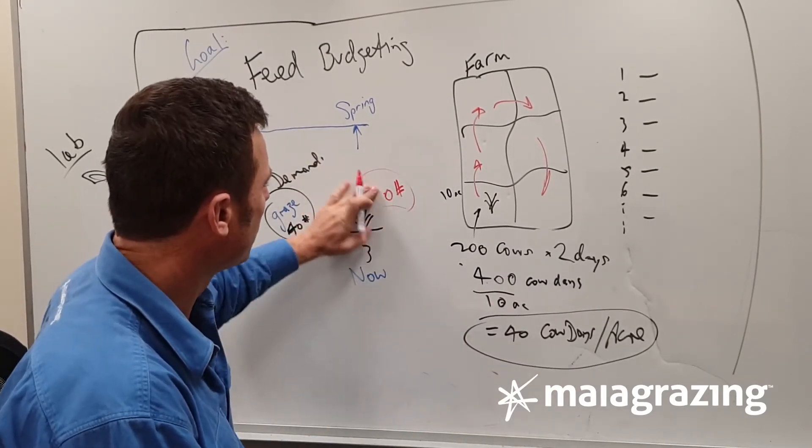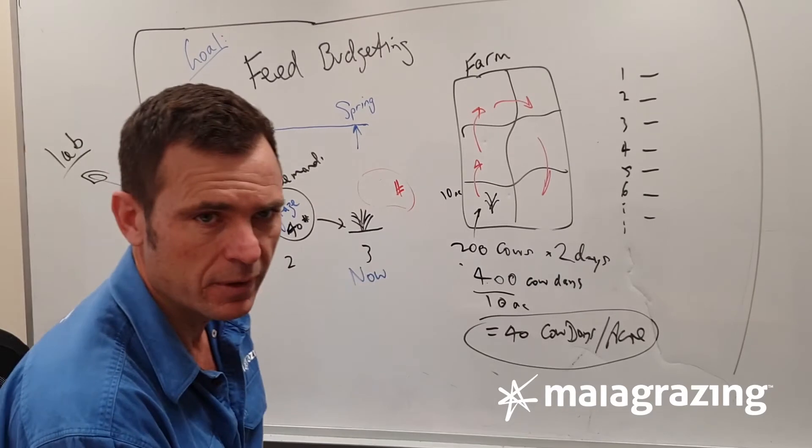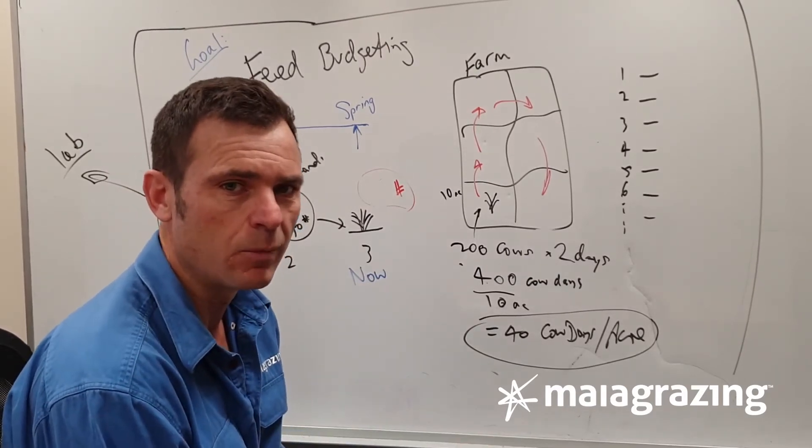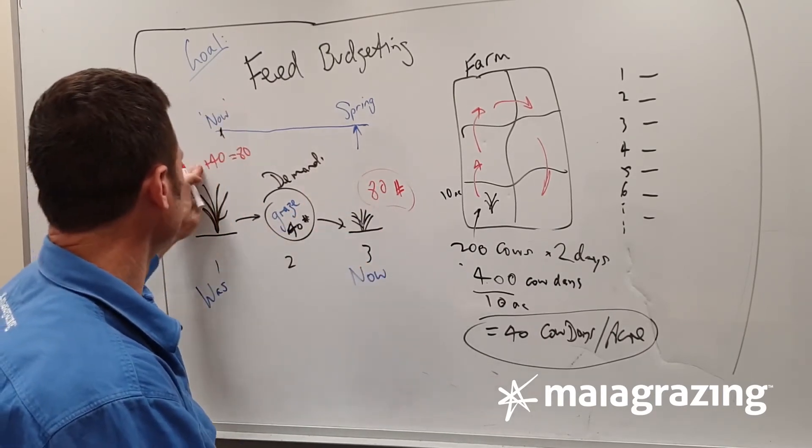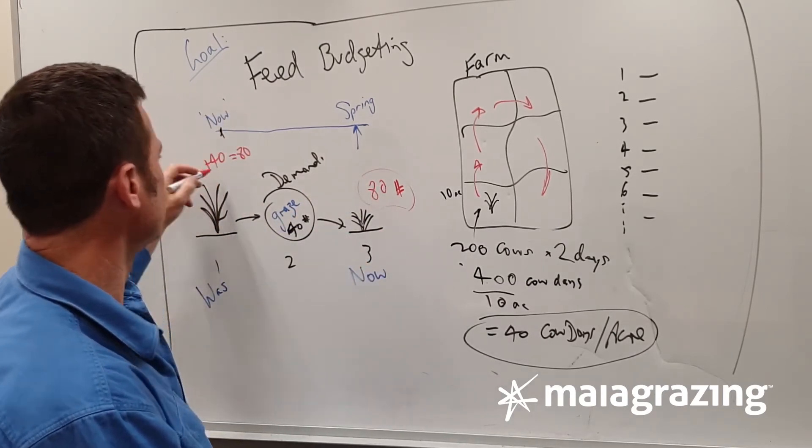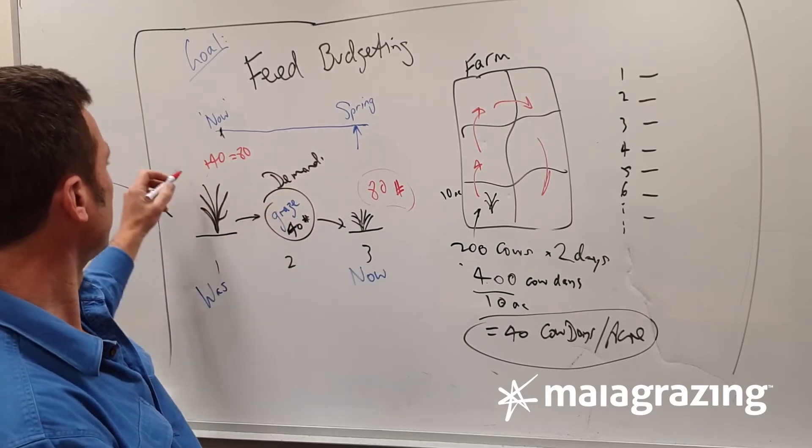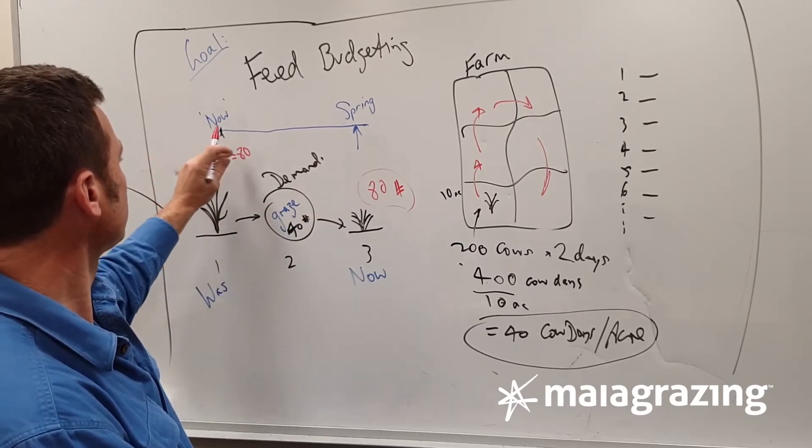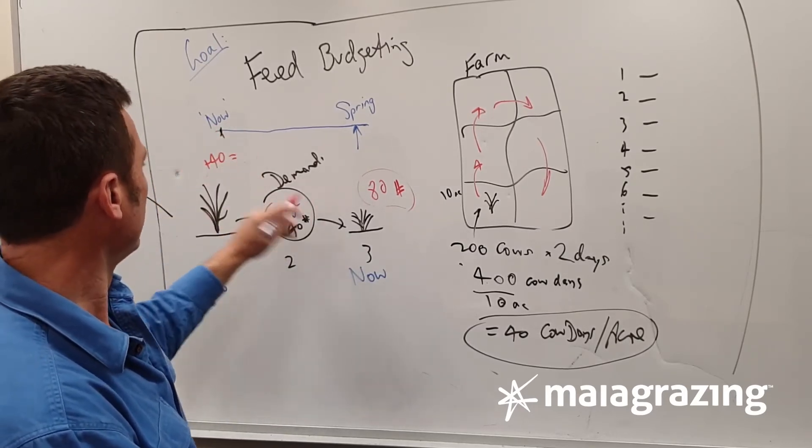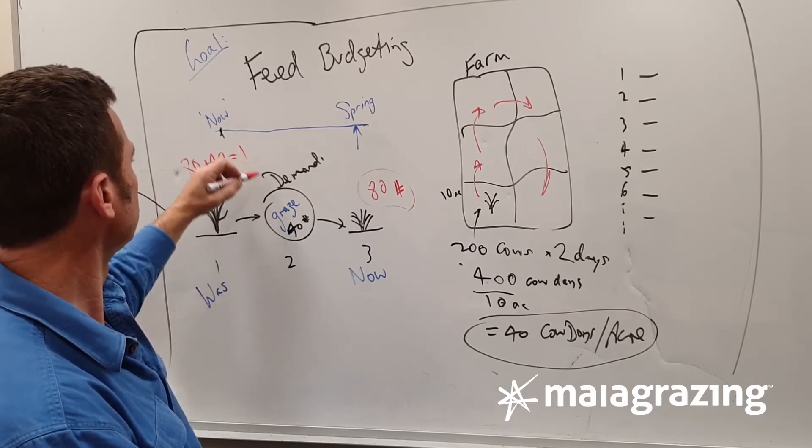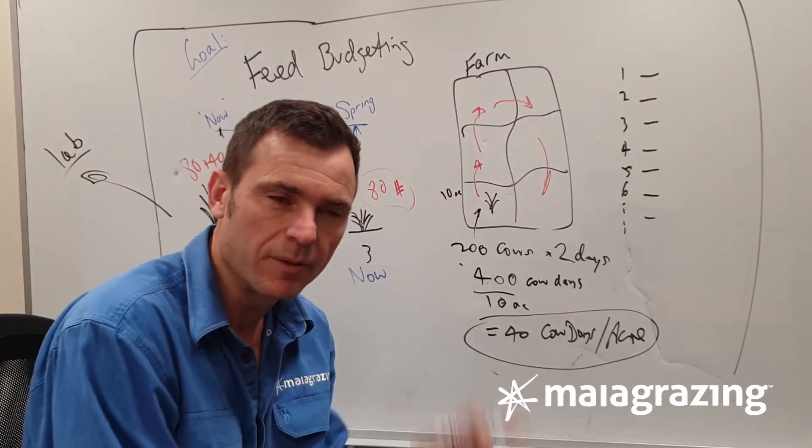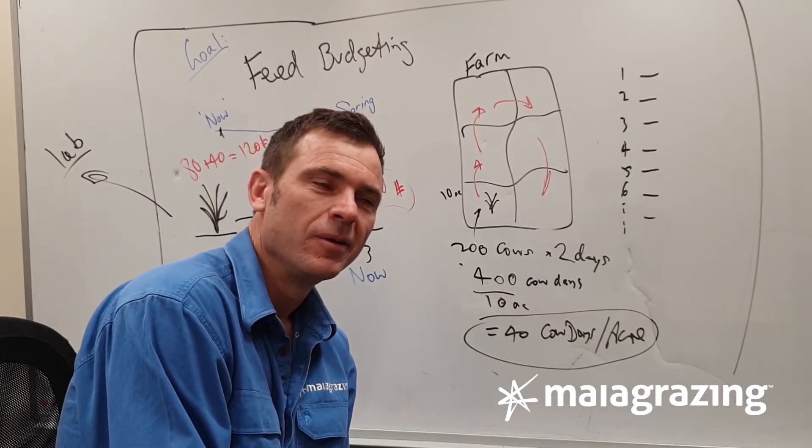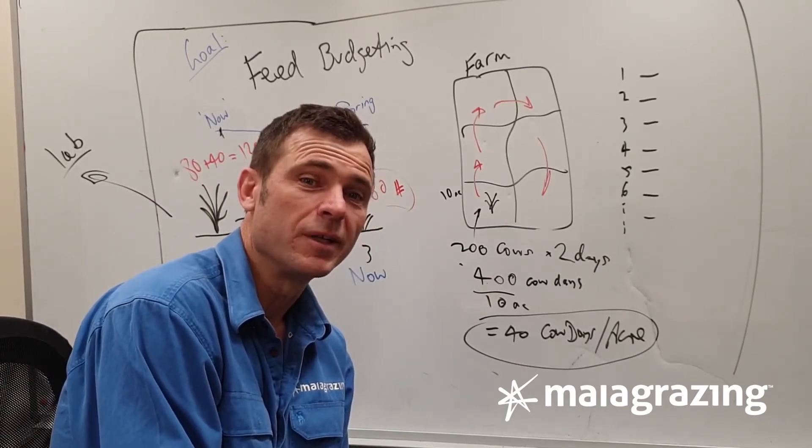So for example, we might look at the forage and say, look, that's double, there's double remaining what we took out. So therefore, there must be 80. And if there's 80 left, we started with, and we took out 40, so therefore 40 plus 80 equals 120 is what we must have started with. And we can start to calibrate our frontal lobe and start to think in cow days.